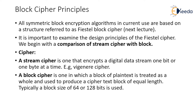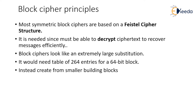A block cipher is one in which a block of plaintext is treated as a whole and used to produce a ciphertext block of equal length. Typically the block size is either 64 bits or 128 bits. When a block comes for the encryption process, instead of bit-by-bit conversion, the complete block undergoes the encryption and substitution process.